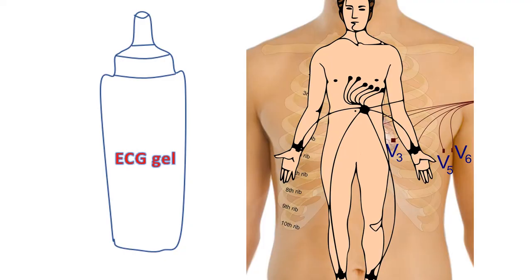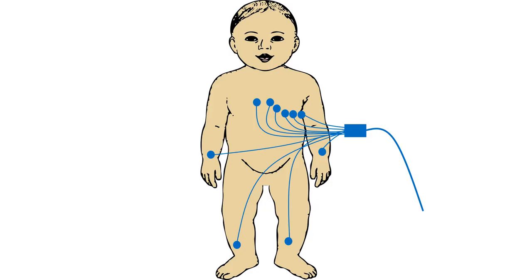To ensure good electrical contact between the recording electrode and the skin, an electrode gel — a good conductor of electricity — will be applied at locations of skin contact. If the designated region is too hairy, it may be necessary to shave the region to get good electrical contact. In young children, small sticky electrodes may be used instead of electrode clips and suction electrodes for the chest.